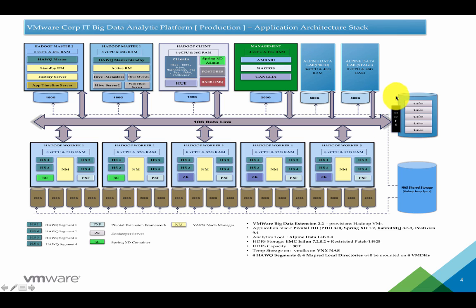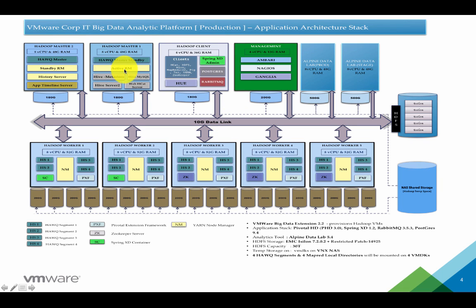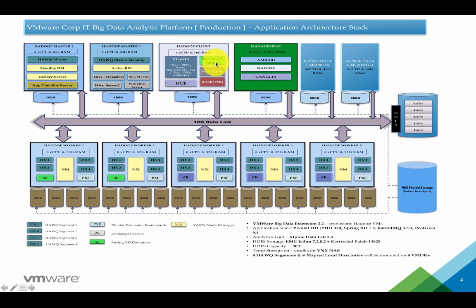As I mentioned, we have used EMC Isilon for HDFS. Each of our worker Hadoop VMs are connected to EMC Isilon HDFS by a 10 gigabit data link. We have a couple of Hadoop masters which have Active Resource Manager, Standby Resource Manager, HAWQmaster, Standby HAWQmaster, History Server, Application Server, and Hive Server components. We also have a Hadoop client which has all the Spring components — Spring HD Admin, Postgres, and RabbitMQ.